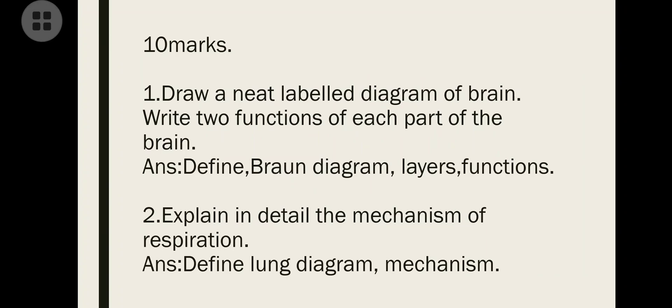First question: Draw a neat labeled diagram of brain and write two functions of each part of the brain. First you define what is the brain, then draw the diagram. Write the layers of the brain - the meninges layers including arachnoid layer and dura mater. Write functions of those layers and also functions of the brain - cerebrum, midbrain, hindbrain. You have to write minimum seven to eight functions.